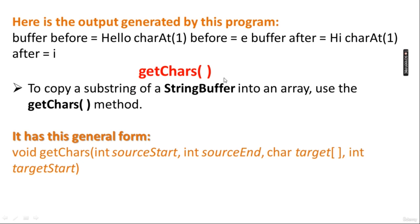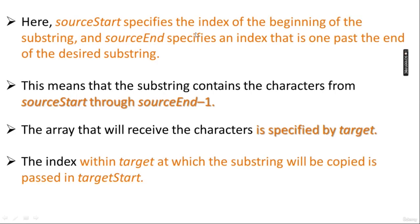The next method is getChars — to copy a substring of the StringBuffer into an array, use getChars. Its general form is: void getChars(int sourceStart, int sourceEnd, char[] target, int targetStart). This allows you to obtain multiple characters from a StringBuffer.